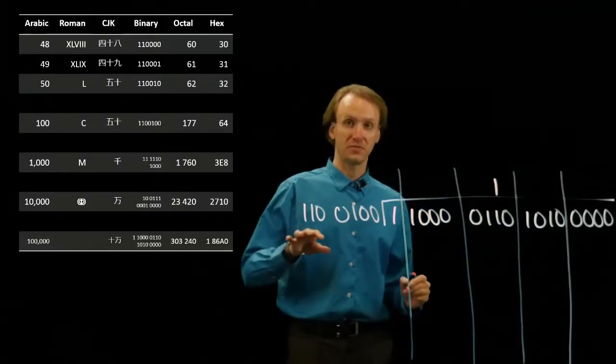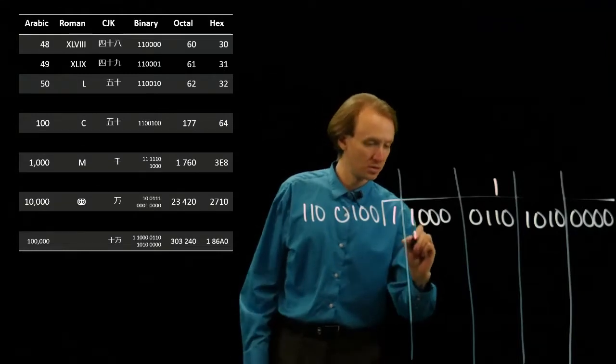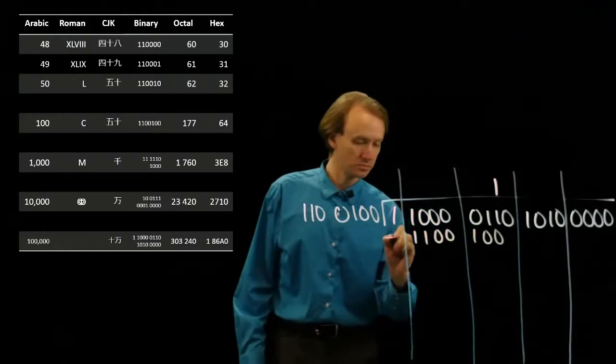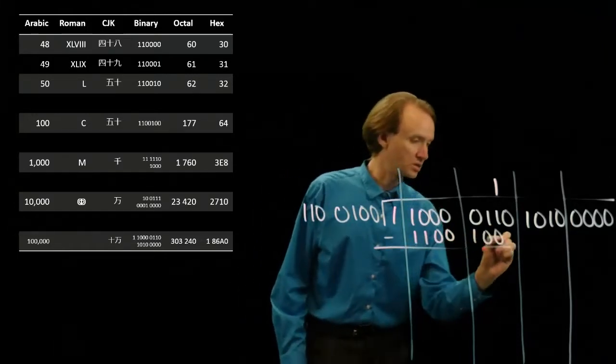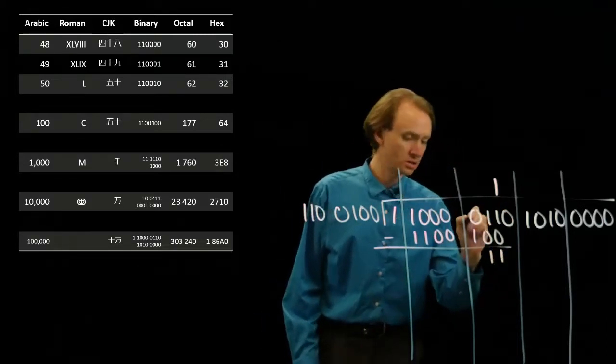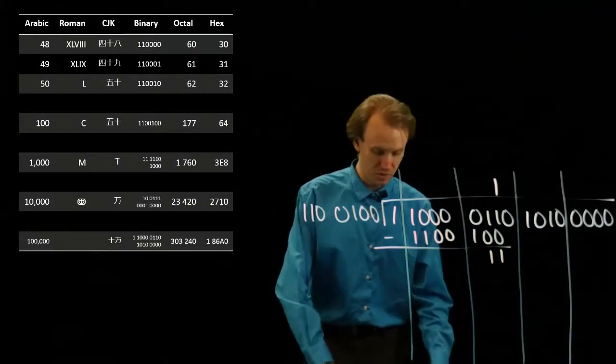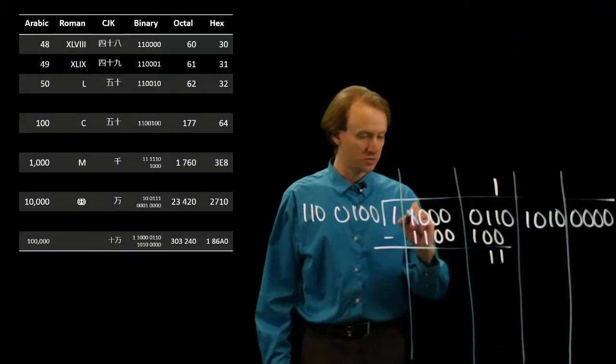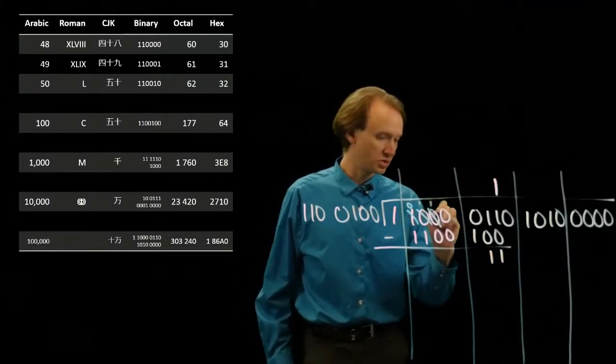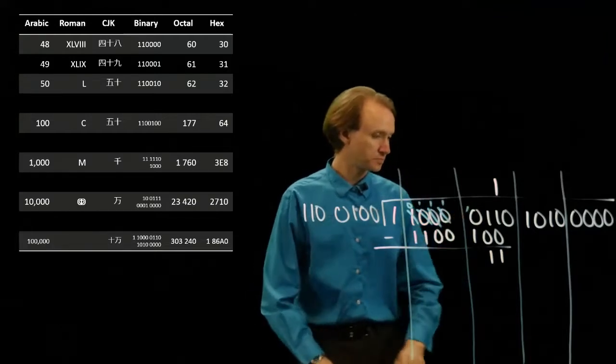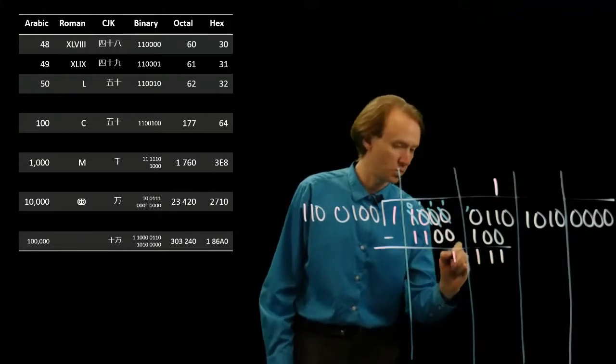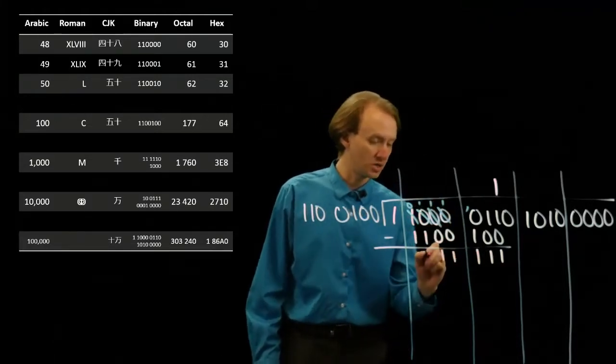So now I'll subtract off my 7-bit number, making sure to keep them lined up. So 1 minus 0 is 1, 1 minus 0 is 1, 0 minus 1. So I'll need to borrow something, and this is the first place I've got to borrow something from. And we're going to be doing a lot of borrowing. So now I have 10 minus 1 is 1, 1 minus 0 is 1, 1 minus 0 is 1, 1 minus 1 is 0.